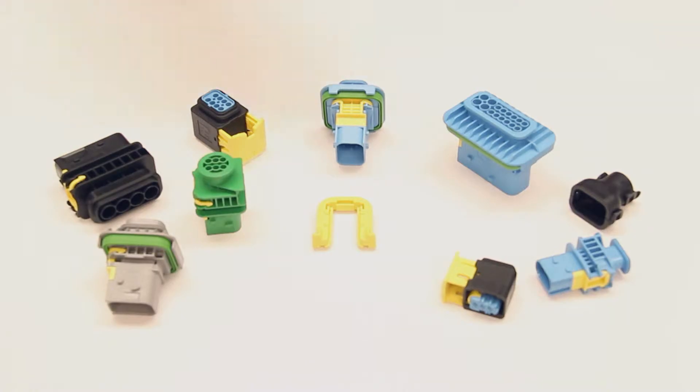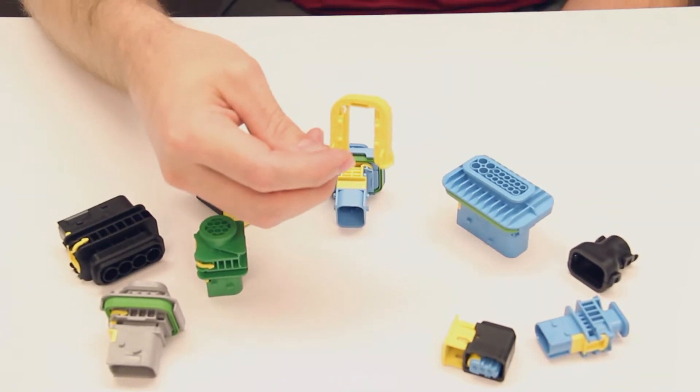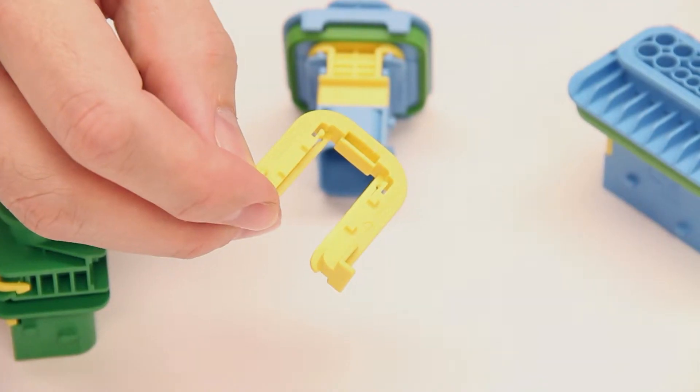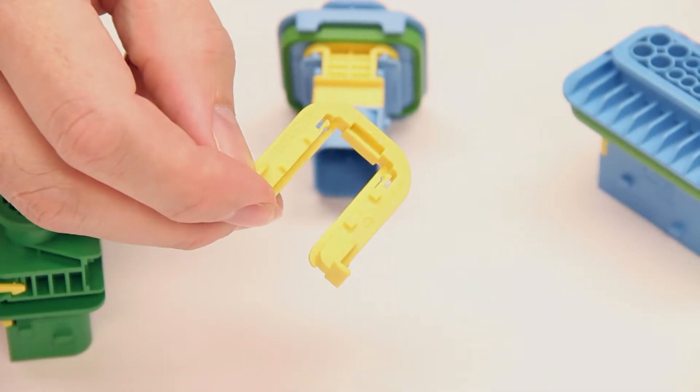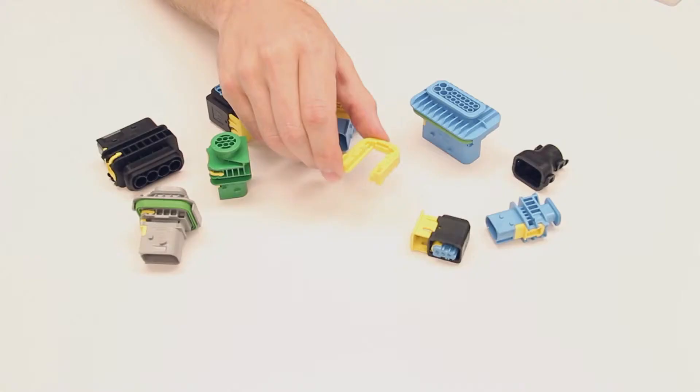For mounting, HDSCS connectors use fixing slides. The fixing slides offer a fast, convenient way to mount the connectors. There are no tools required, and no mounting hardware is needed. They come in different sizes to accommodate several panel thicknesses.